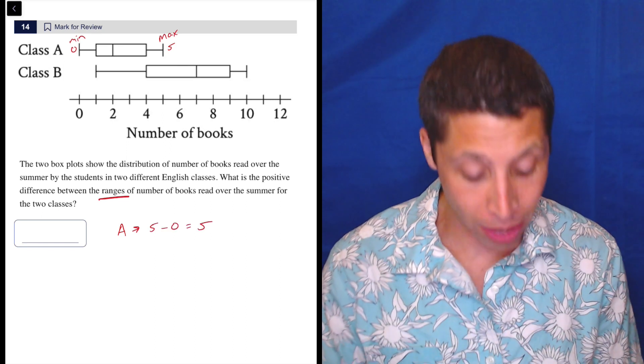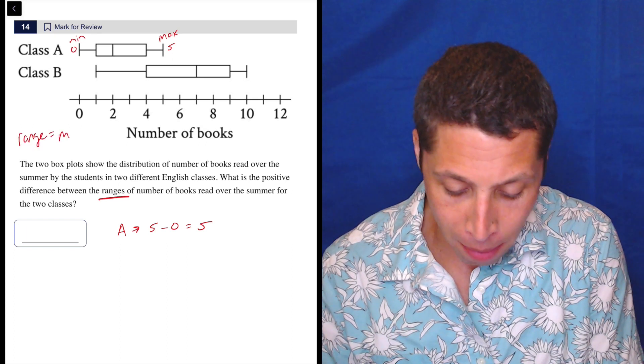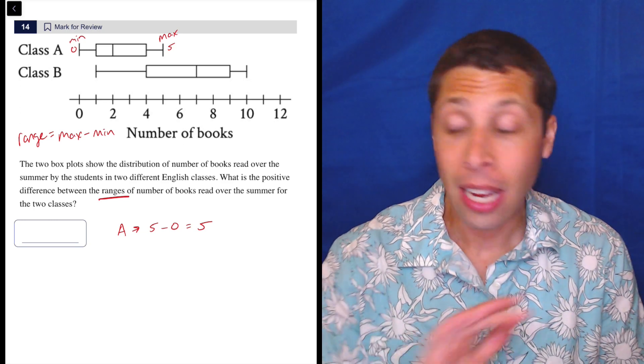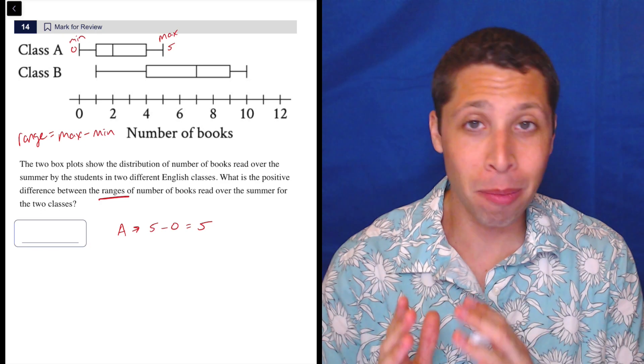Remember that the way to calculate the range in general: range is the maximum number minus the minimum number. It doesn't matter whether it's presented on a box plot or a frequency chart or a histogram. The maximum minus the minimum is a formula for range that you need to memorize.